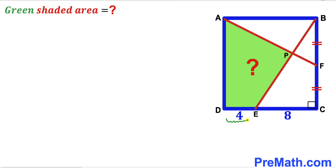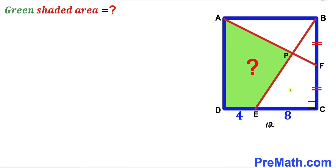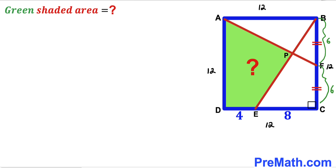We know segment DE is 4 and segment EC is 8 units. So the whole side length of this blue square is 4 plus 8, which is 12 units. Since we are dealing with a square, all side lengths are 12. Furthermore, since BF equals FC, each of those segments is half of 12, which is 6.